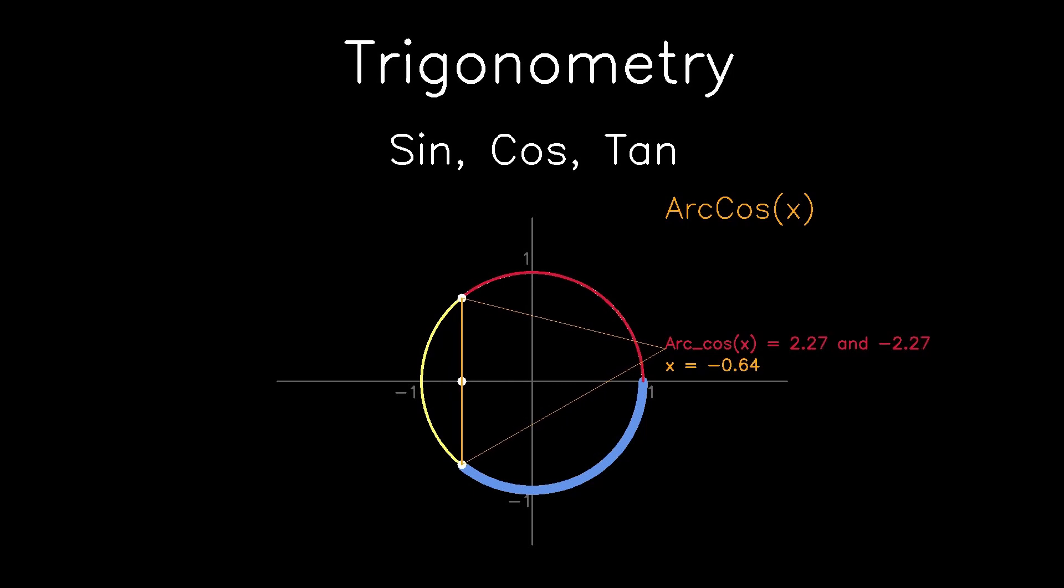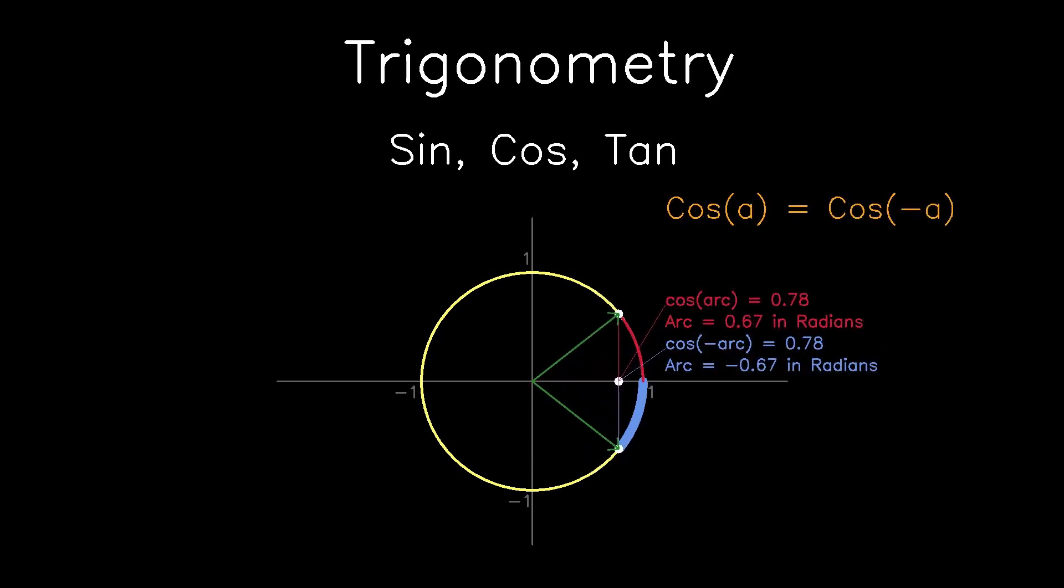Arc cos is the inverse function where we input the x-coordinate and it will output the corresponding arc length. Now, because it's a circle, there are two corresponding arc lengths, the one on the top and the one on the bottom. Also, the x values will need to be in the domain between negative 1 and 1. So this makes it obvious that cos A equals cos of negative A, because this is a reflection around the x-axis. And what this means is if there's a negative inside the cos function, you can just simply throw away the negative.